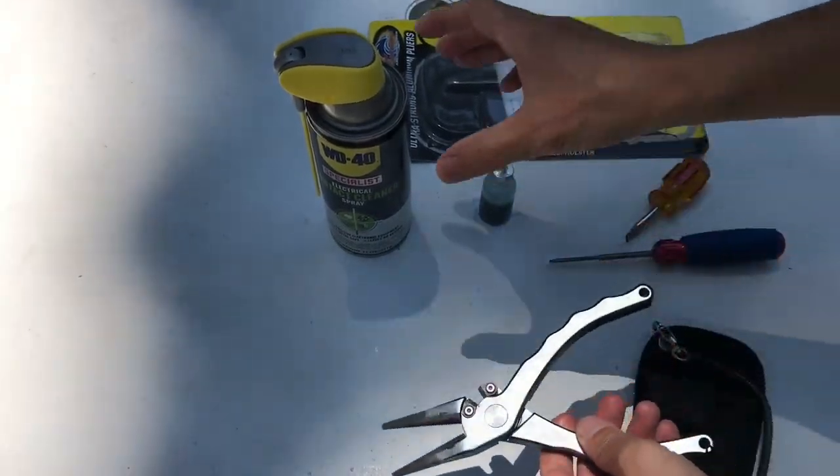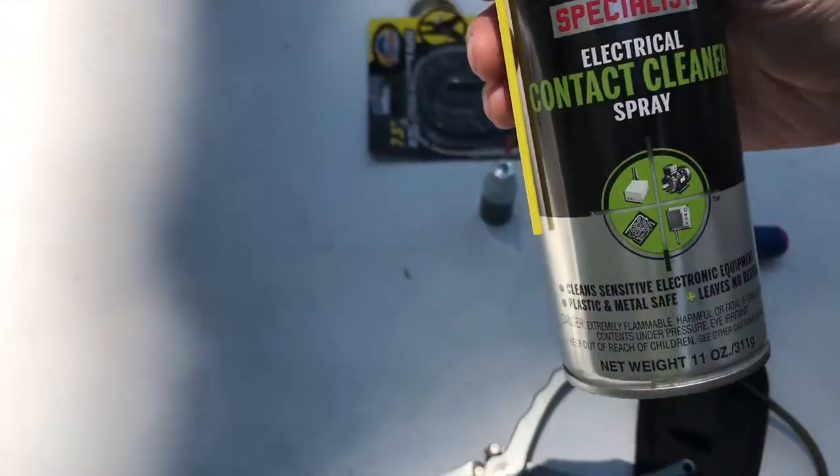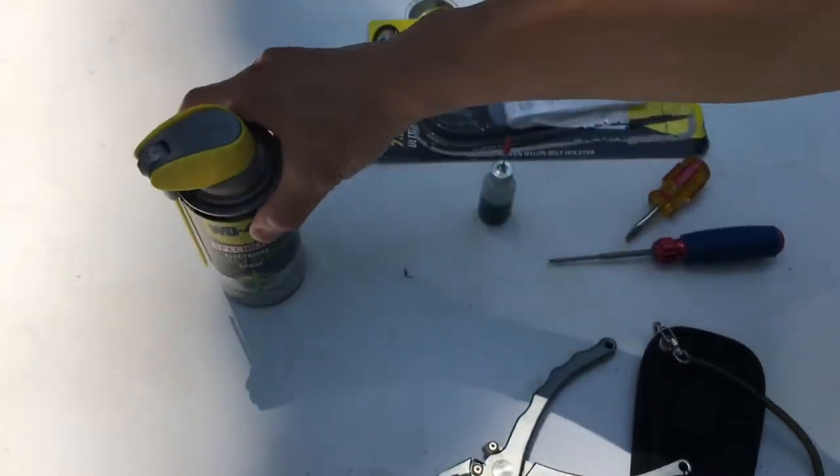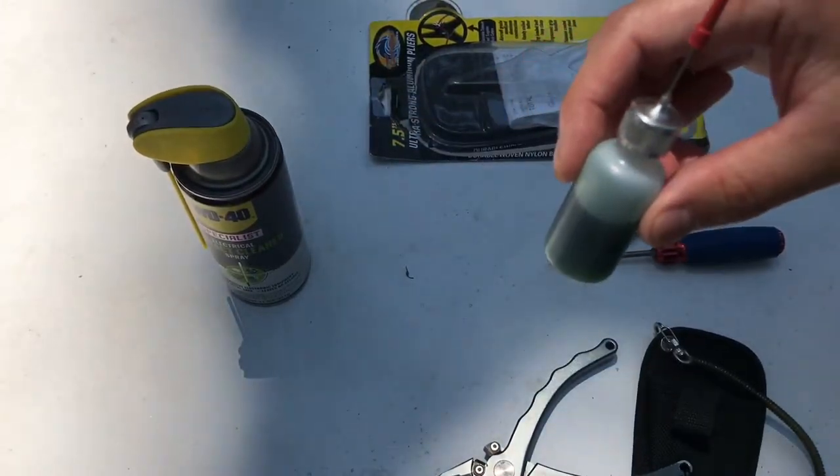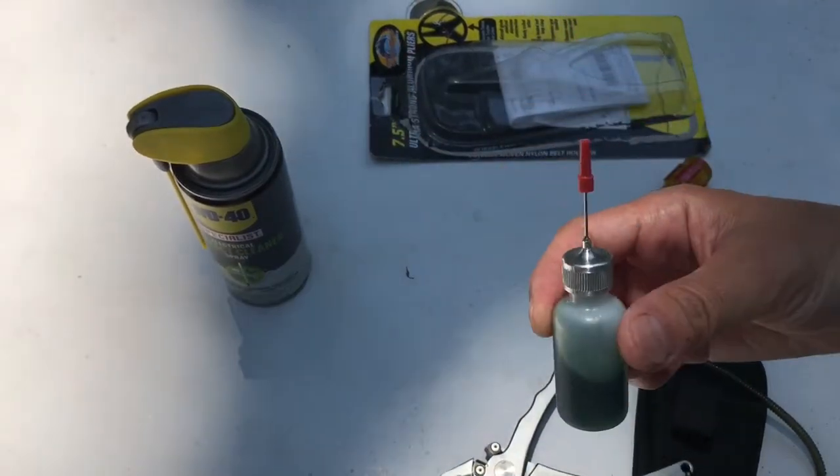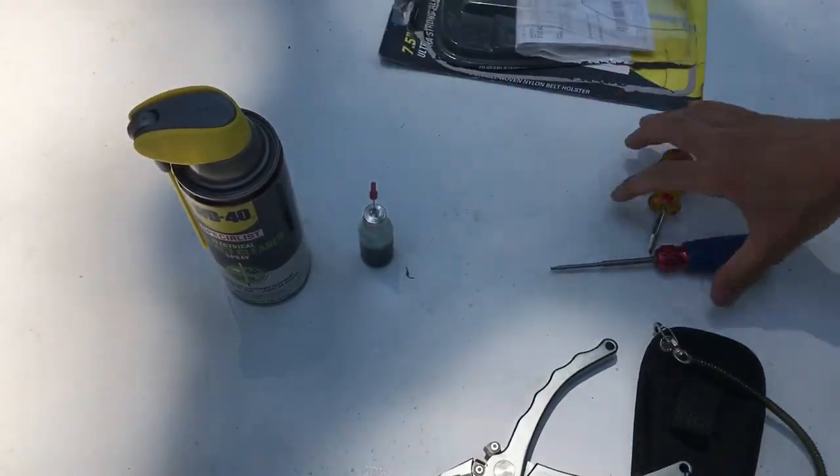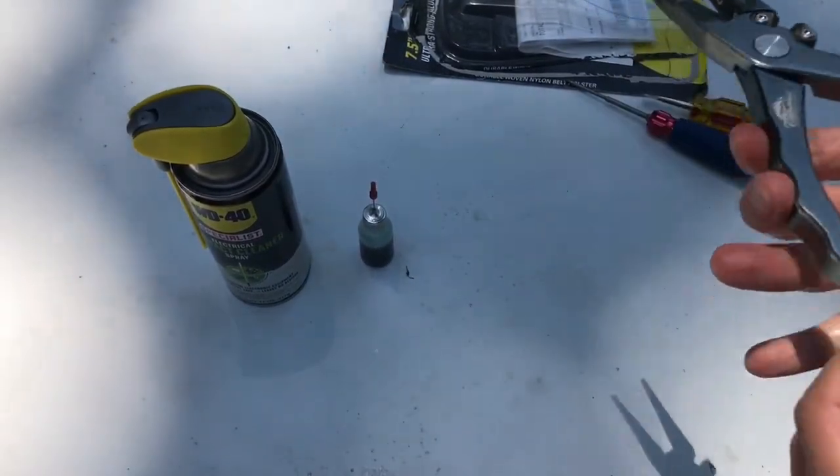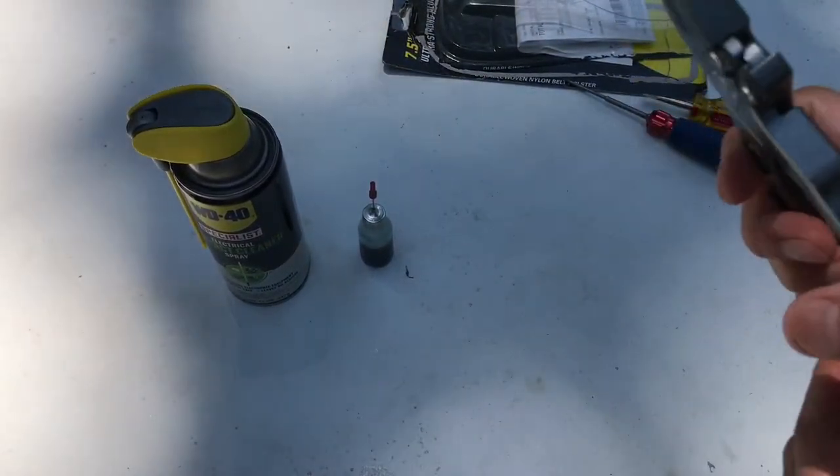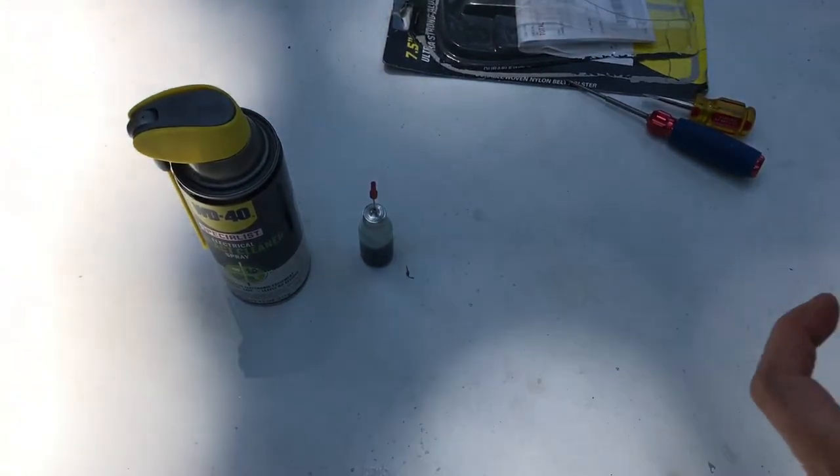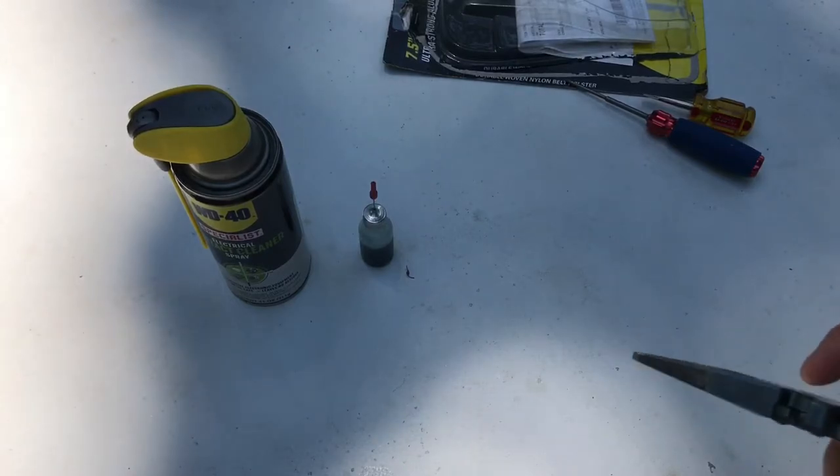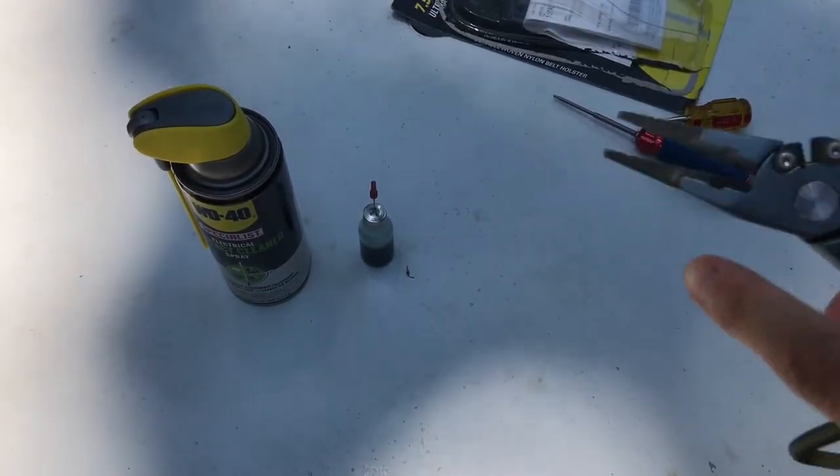So I used this WD-40 electronic contact cleaner and then some Corrosion X, and I put this in my own bottle. And these pliers are good, man, they're awesome. You know, they don't rust because they're aluminum and the top sections are steel, so they're stronger.